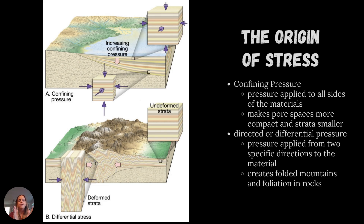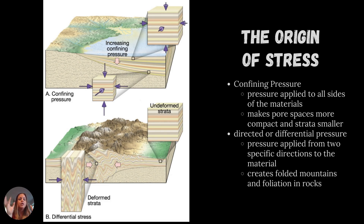With confining pressure — pressure from all sides — a rock with layers just gets smaller and more compact. The pore spaces between grains get much smaller, but there's really no deformation of the material because it just got smaller.